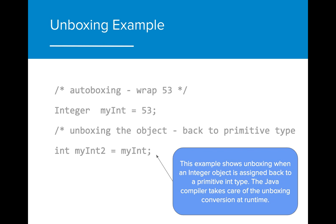as we did in a previous example, we can actually assign an Integer object to a primitive variable, and it will automatically convert it to the correct type. This example shows unboxing when an Integer object is assigned back to a primitive int type. The Java compiler takes care of the unboxing conversion at runtime.